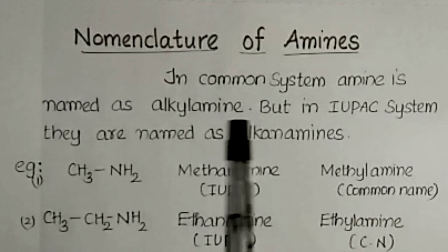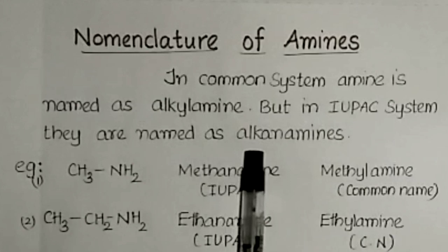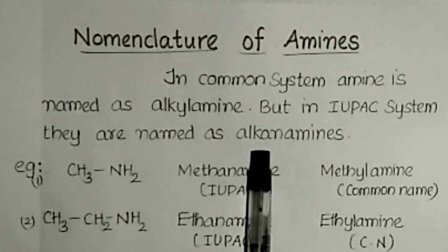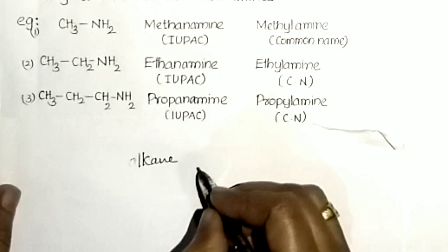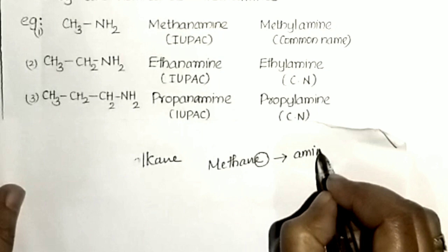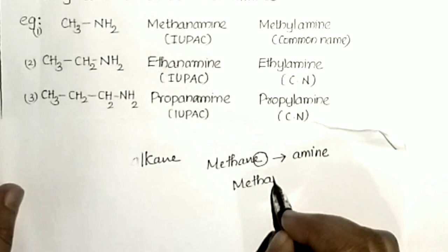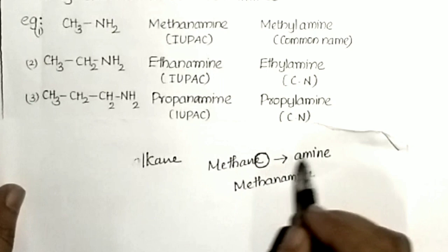In the IUPAC system, they are named as alkanamines — not alkyl amines, but alkanamines. For example, methanamine, ethanamine, propanamine, etc. For alkanes, the terminal 'e' is replaced by 'amine'. So methane becomes methanamine, and similarly for other alkanes.